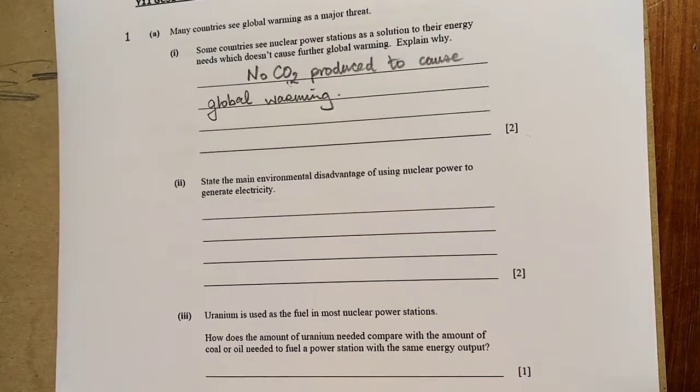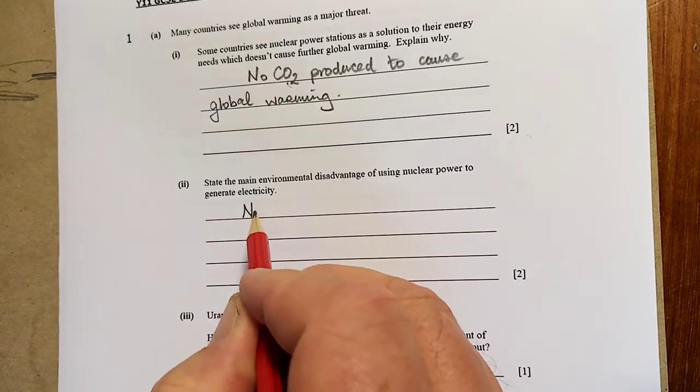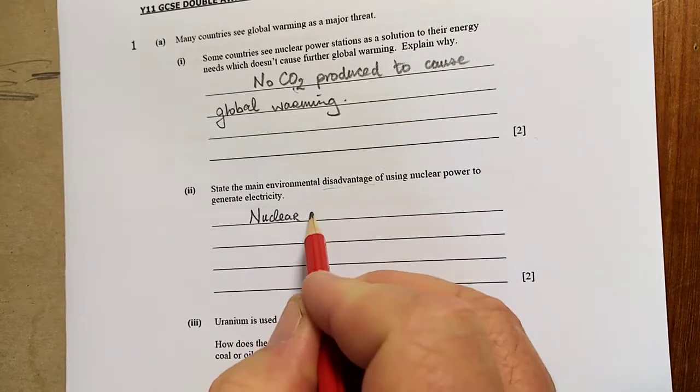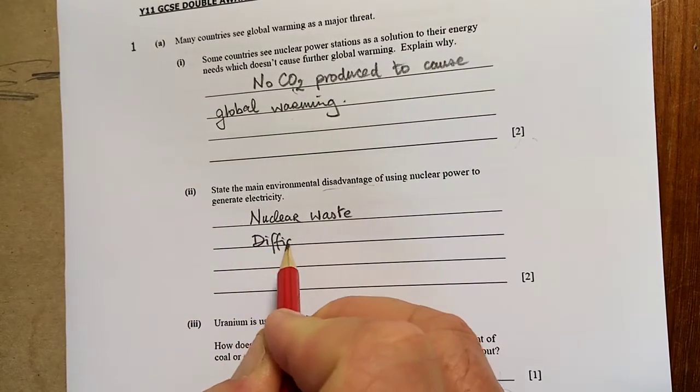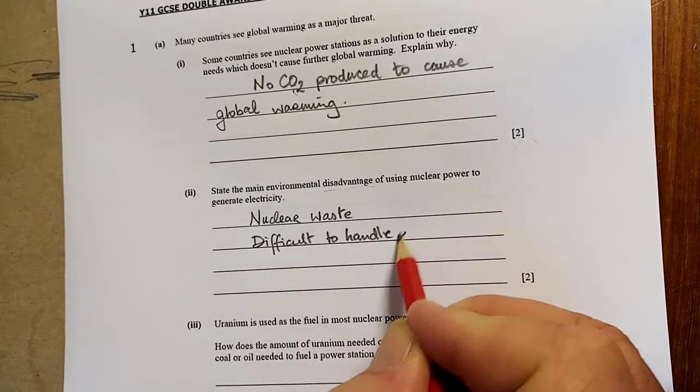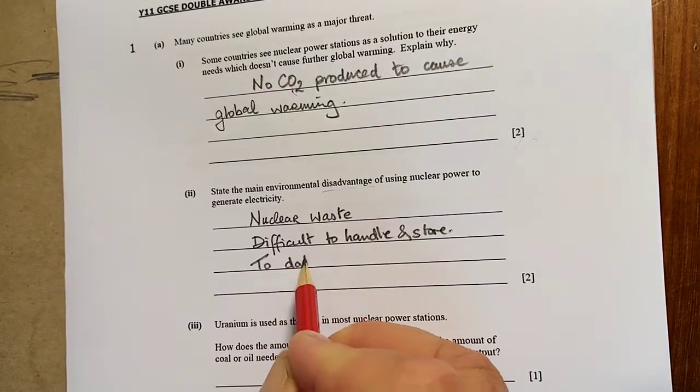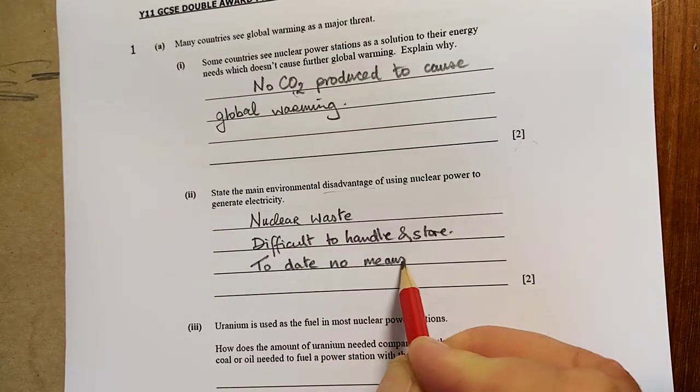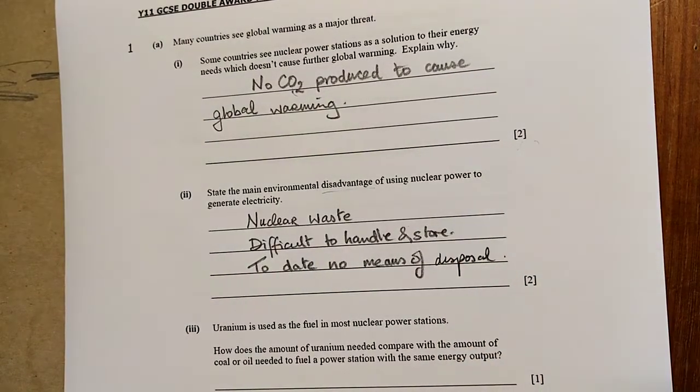State the main environmental disadvantage. Two marks. So, the nuclear waste is the problem. That is the disadvantage. Nuclear waste, difficult to handle and store. And to date, no means of disposal. So that is the problem with that one.